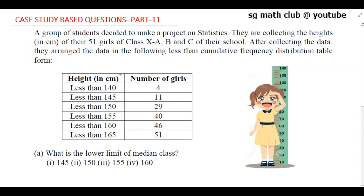After collecting the data, they arranged it in the following less-than cumulative frequency distribution form. For example, the number of girls having height less than 140 is 4, and the number of girls having height less than 145 is 11. We have to convert this into a normal frequency distribution table.